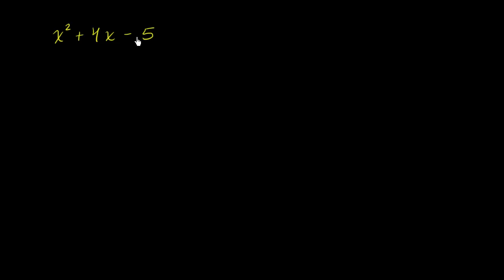The fact that their product is negative tells you one of them is positive and one is negative. One option is -1 and 5. This actually works: -1 times 5 is -5, and -1 plus 5 is positive 4.